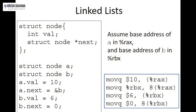Now let's get started with the linked list. Here we have a struct called node which holds a value and a pointer to the next node. We've created two instances: struct node a and struct node b. We set a.val equals 10, a.next points to the address of b, b.val equals 0, and b.next equals 0, which for now we can imagine as null.